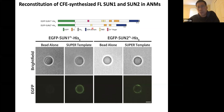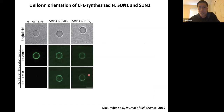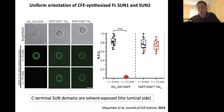Using the protease digestion assay, if you purify GFP and put it on a nickel-NTA lipid-coated bead, it is completely digested within 15 minutes. But when you do the same experiment with Sun1 and Sun2, fluorescence is fully retained after 15 minutes, suggesting the N-terminal GFP is protected from solvent — it's on the inside of the bilayer. Quantification shows no reduction in fluorescence levels after protease digestion. So the C-terminal SUN domains are solvent-exposed while the N-terminal GFP is protected.